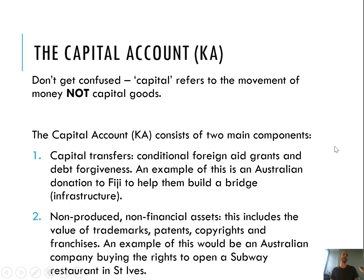The other thing recorded on the capital account is transactions involving non-produced non-financial assets — so trademarks, patents, copyrights, and franchises. A good example is if an Australian company buys the rights to open a Subway restaurant. That means the Australian company has to pay Subway in America money, and in exchange the Australian company gets the franchise rights. The money flows out of Australia and it's recorded right here on the capital account.